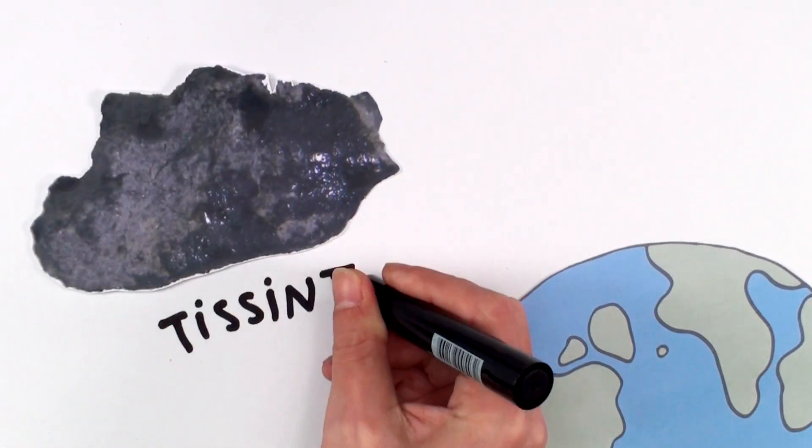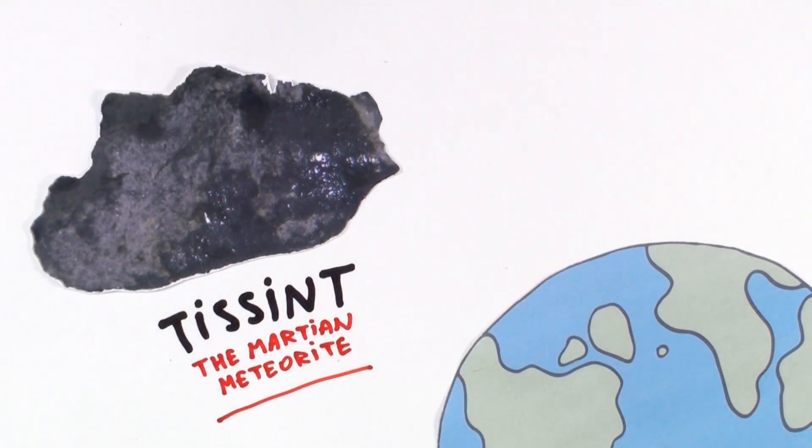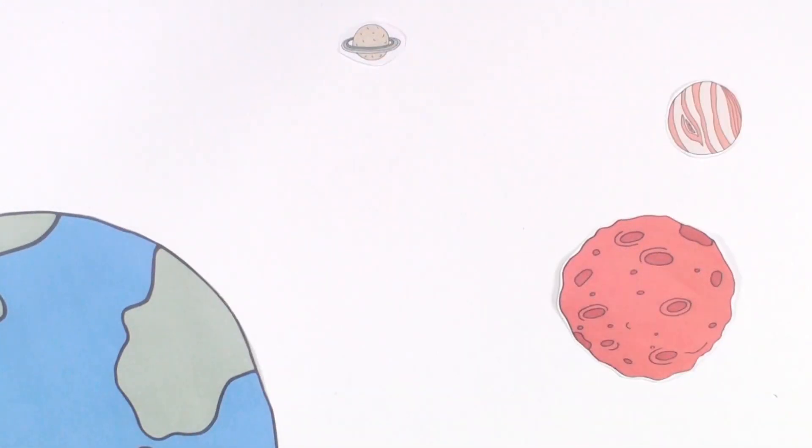Hi, I'm Tissint, the Martian meteorite, and I have a secret to share. I am evidence that there may have been biological activity on Mars in the past.